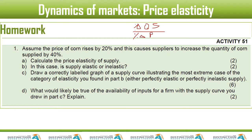So here, if we read, it says assume the price of corn increased by 20%, so the 20 goes on the bottom, and the quantity supplied for corn changed by 40%. So that will be 40 divided by 20. As we all know, 20 goes into 40 two times, so our answer to this question will be two.